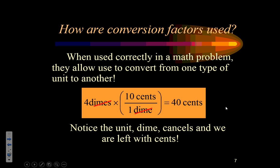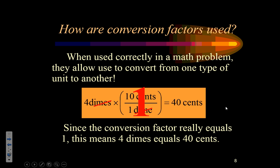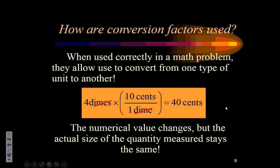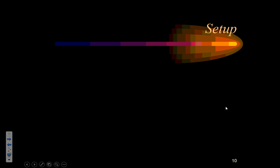Notice that the unit dime actually cancels because it's on top and bottom. Just like numbers on top and bottom can cancel and variables on top and bottom can cancel, so can units. Because a unit is actually a part of the problem. And really, what we've done here is we've multiplied by one. So, one thing to remember is what we write here and what we end up with here are essentially two equal things. They're equal to each other because all we did was we multiplied by one. So, it would be true that four dimes is equivalent to 40 cents. And the reason that's true is a conversion factor is essentially equivalent to one. The numerical value is going to change, but the actual size of the quantity measured stays the same because four dimes really is 40 cents.